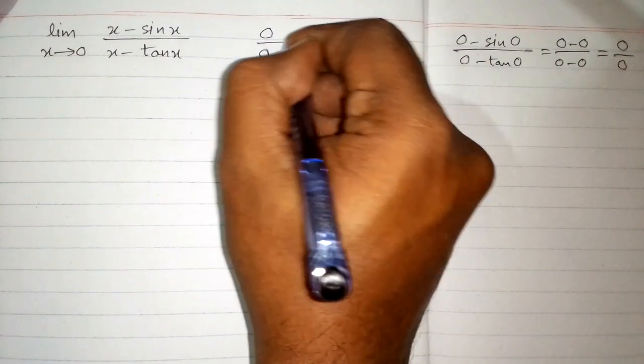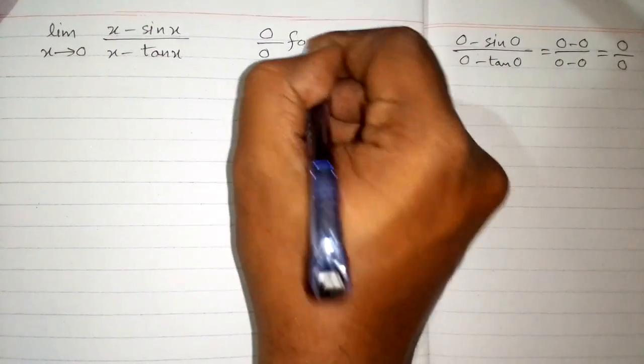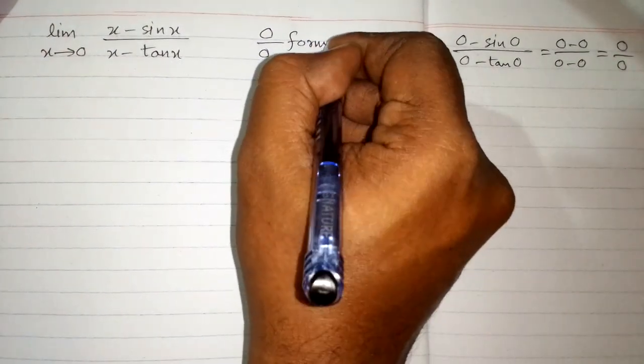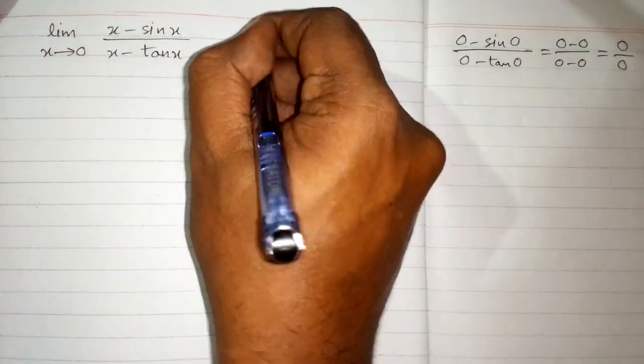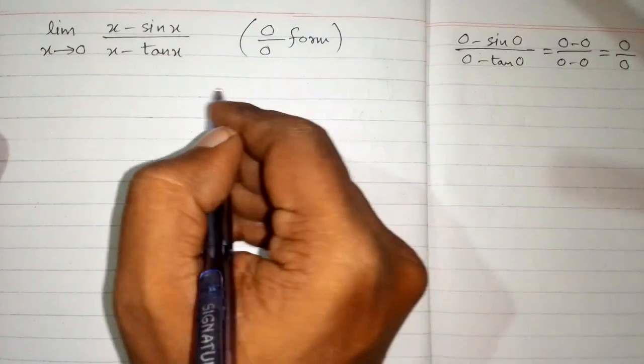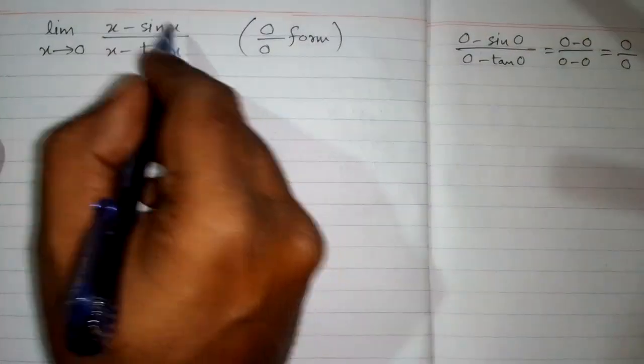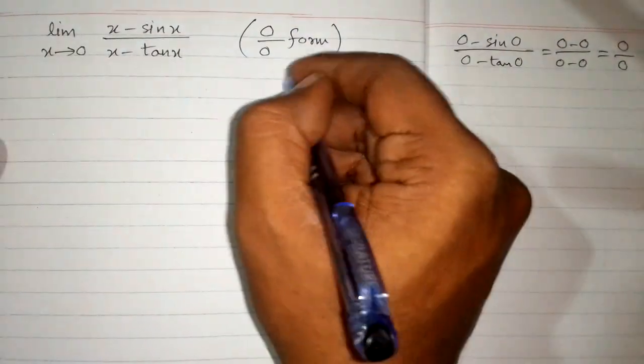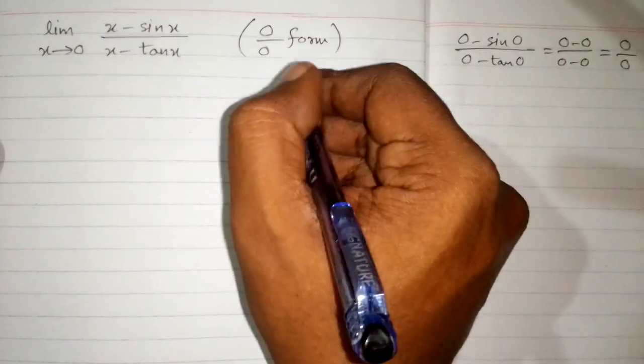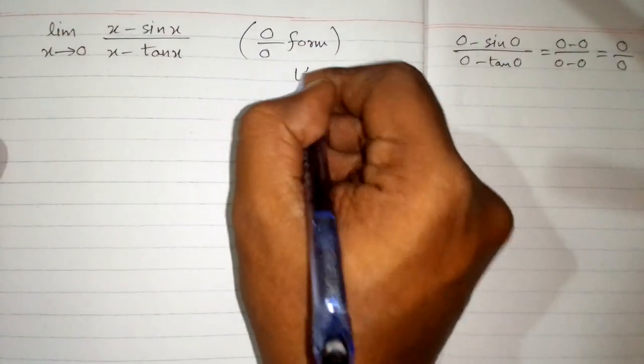Now this is the 0 upon 0 form, which is an indeterminate form. So we can apply the limit by using L'Hôpital's rule.